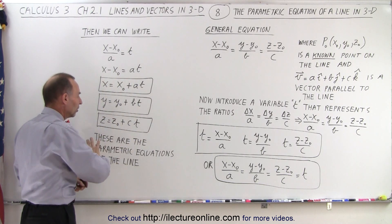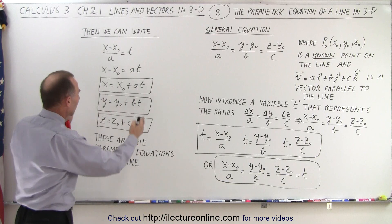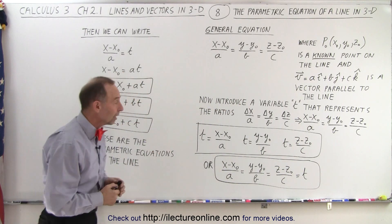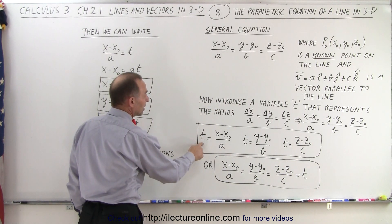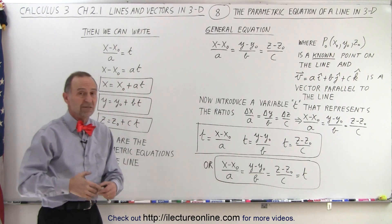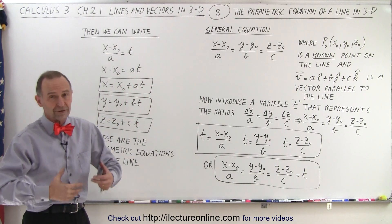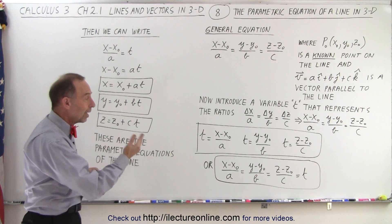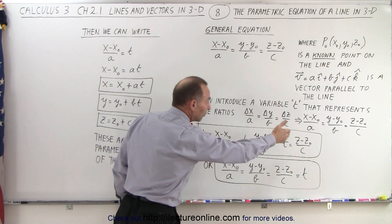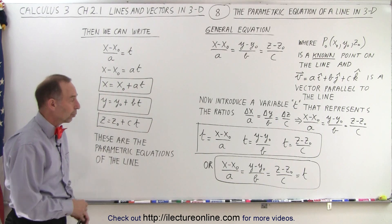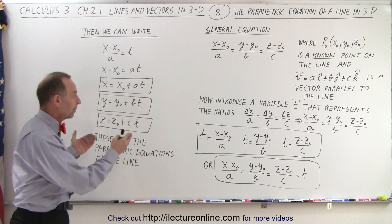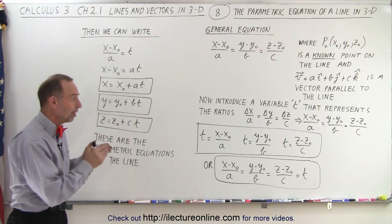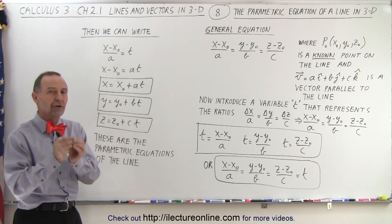So this is one way to write the parametric equations, or we can write them as the three ratios equal to each other. What we're doing is simply representing one more variable t that equals the ratio. It could be one half, a quarter, two, five, or ten — it doesn't matter. As long as the vector is parallel to the line, that ratio will always be the same for all three coordinates x, y, and z. And so we can write the parametric equations in terms of the ratio of the changes in the x coordinates divided by the length of the coordinates of the parallel vector.